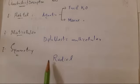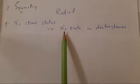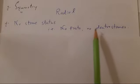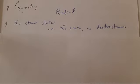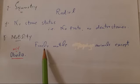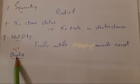Number three, body symmetry: animals of this phylum possess radial body symmetry and are therefore included in kingdom Radiata. Number four, no stome status — they are neither protostomes nor deuterostomes, because protostomes and deuterostomes are two groups of triploblastic animals while these animals are diploblastic. Number five, motility: these animals are freely motile and capable of locomotion, except Obelia, which is sessile or immotile — this is important for MCQs.